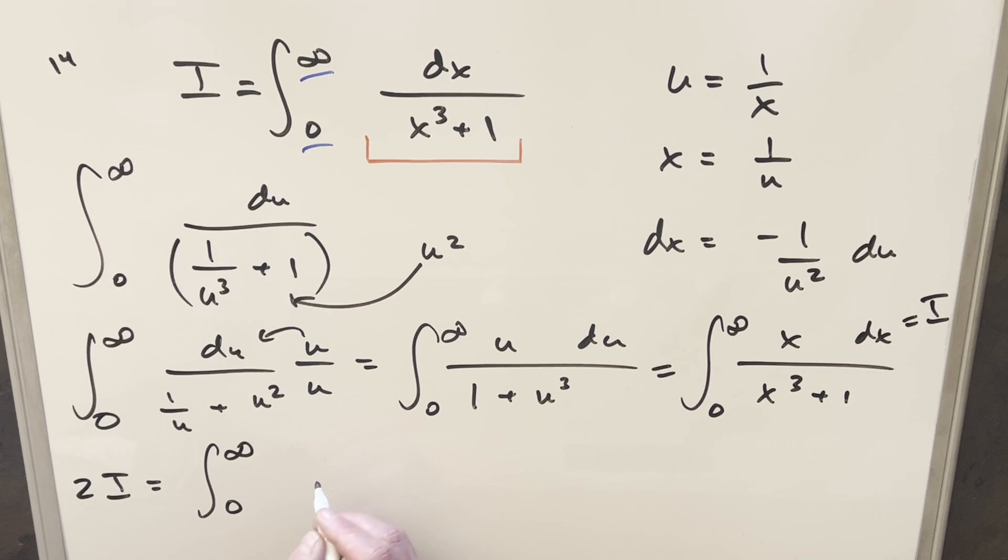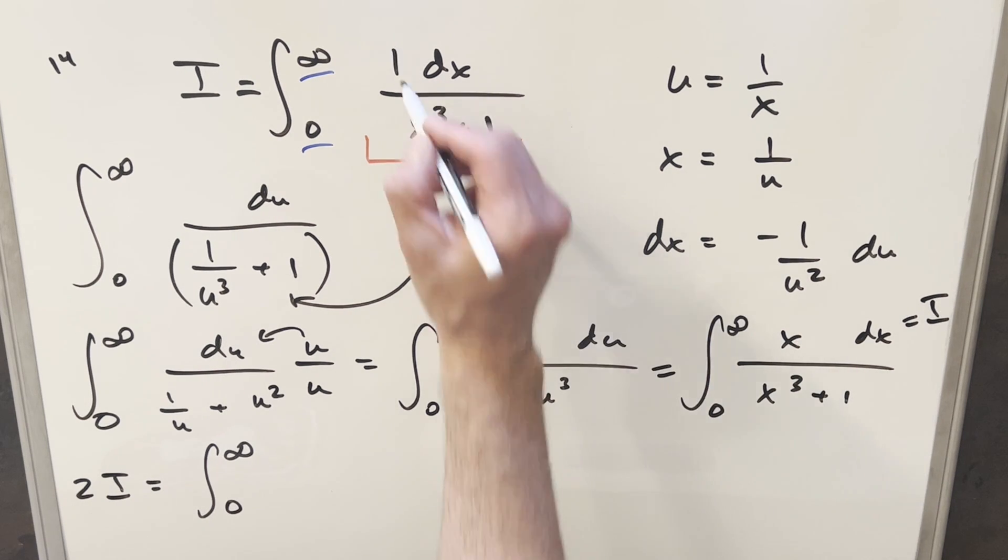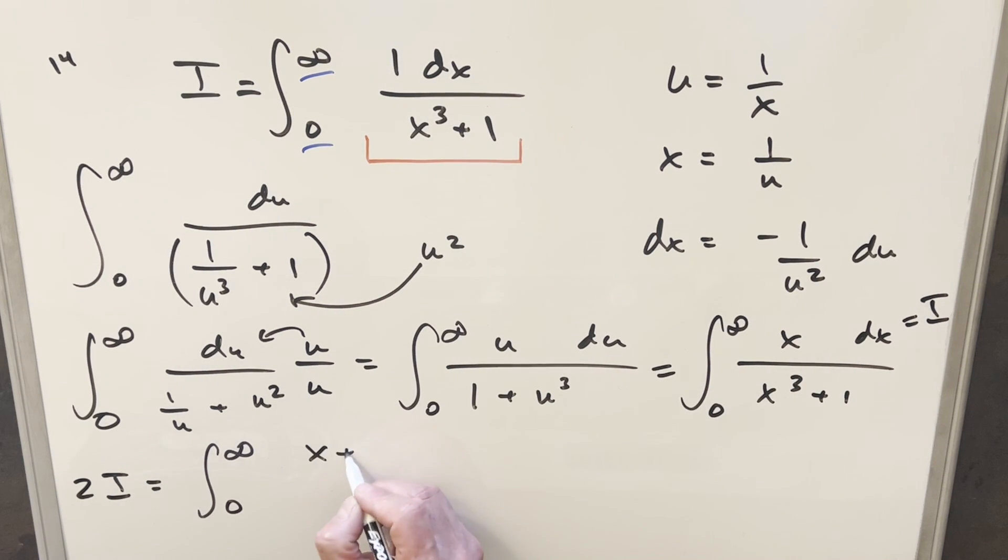So what we're going to have here is two copies of the integral are 2i. Then we have the same bounds. Then in the numerator, this is going to become, we have like a 1 right here. So I can write this as x plus 1 over x cubed plus 1 dx. I'll divide off this 2 right here so we can isolate our integral, and we'll just have a 1 half in front here.